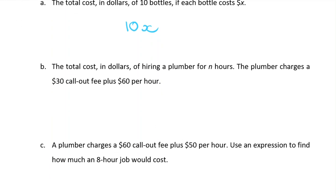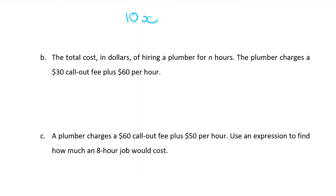Question B: The total cost in dollars of hiring a plumber for N hours if the plumber charges a $30 call-out fee plus $60 per hour. So it's going to cost $30 to get the plumber to your house before they do any work. Then it's going to cost you $60 for every hour of work that they do. And they're doing N hours of work, so we're going to times that by N. So $30 call-out plus $60 for the N hours of work.